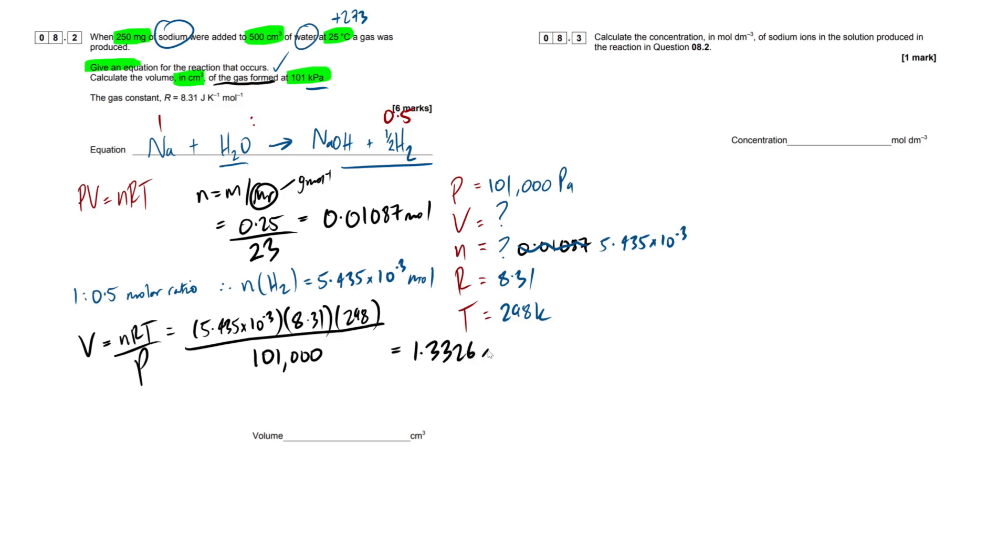So put that in your calculator, and you should get an answer of 1.3326 times 10 to the minus 4. Now, is that our final answer? What is the standard units of volume in ideal gas? It's meters cubed. Do we want meters cubed? No, we don't. We want it in centimeters cubed. So what we're going to have to do to convert from meters cubed to centimeters cubed, do you remember what we have to do?